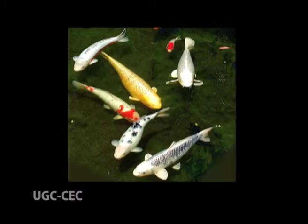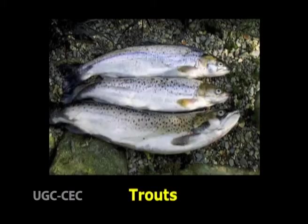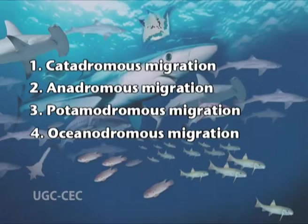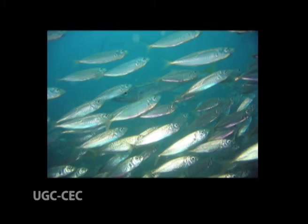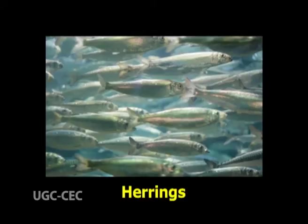The migration of fresh water fish within fresh water for breeding is called potamodromous migration. Examples are carps and trouts. Next is oceanodromous migration — the movement of marine fishes within the sea for breeding is called oceanodromous migration. Examples are mackerels, tunas, and herrings.